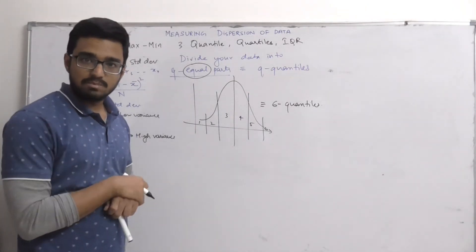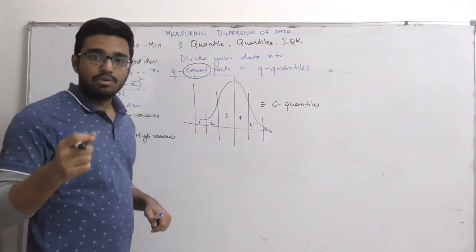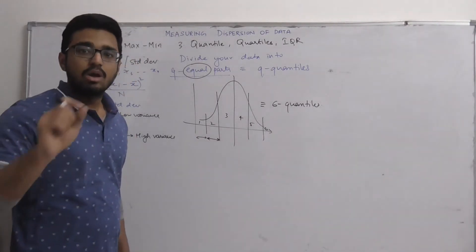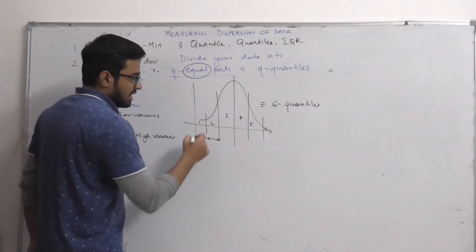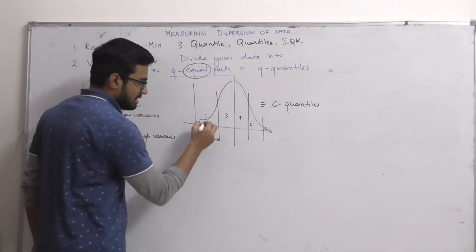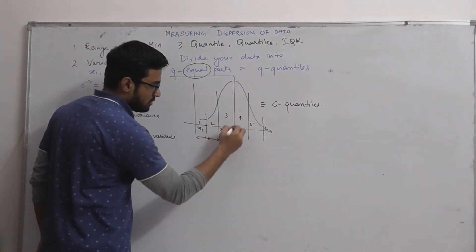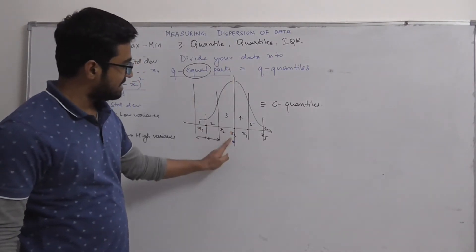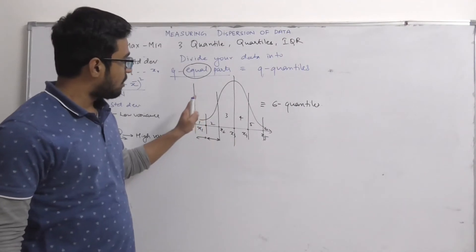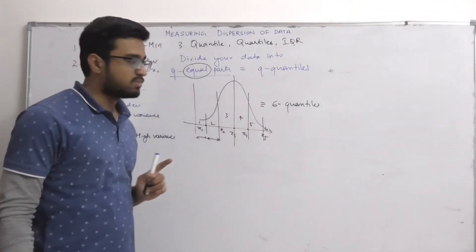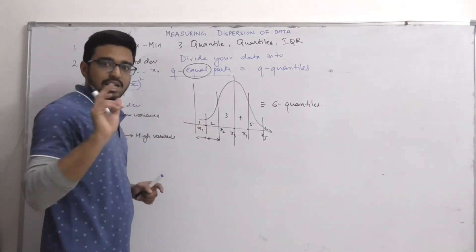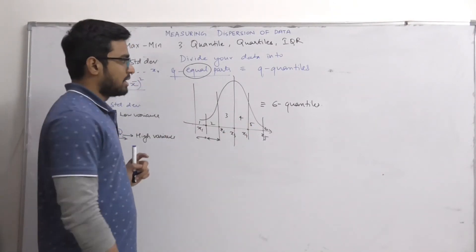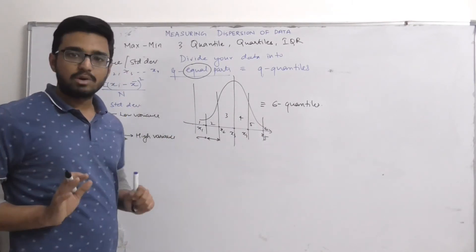Now the question arises: what does 'equal' mean here? Are the number of observations the same, or are the ranges the same? If we have six parts of the data we will have five points: x1, x2, x3, x4 and x5. If we look at x3, it divides the data into two halves — the number of observations on this part is equal to the number of observations on this part. So 'equal' means each quantile has the same number of observations.